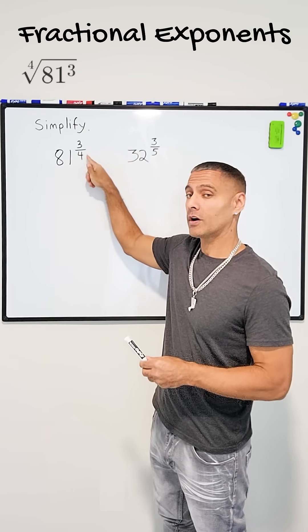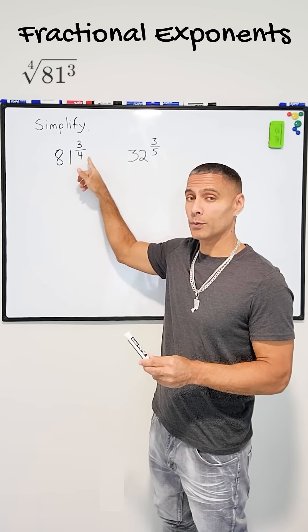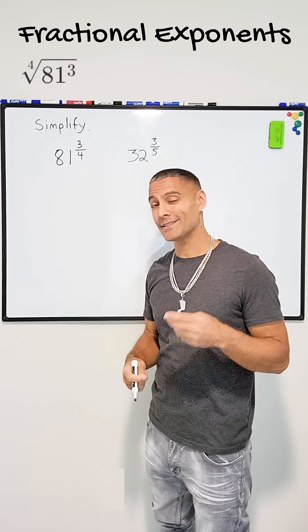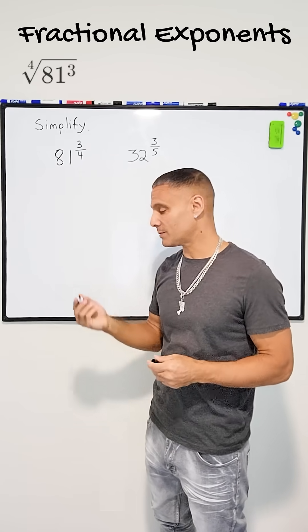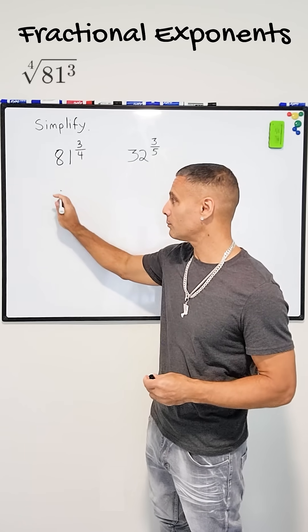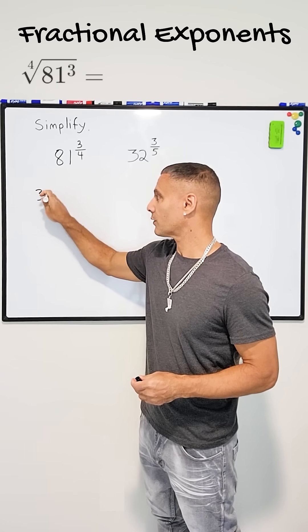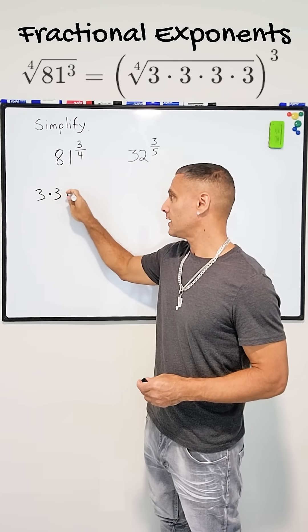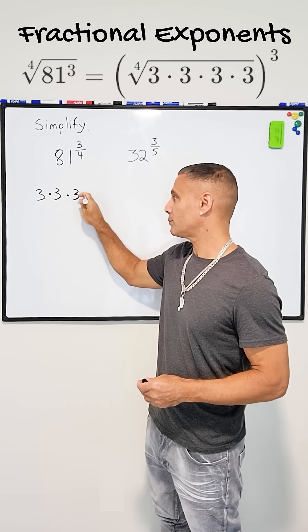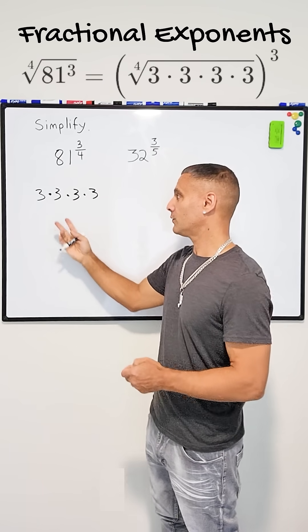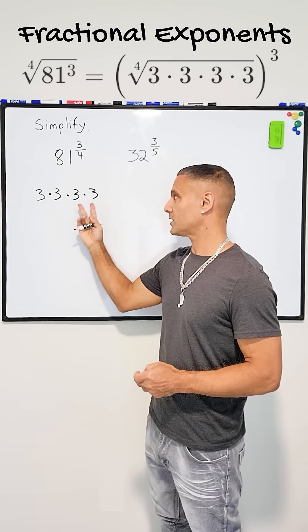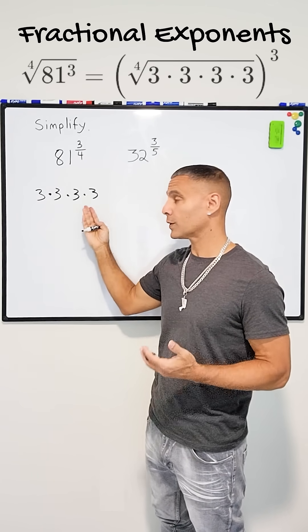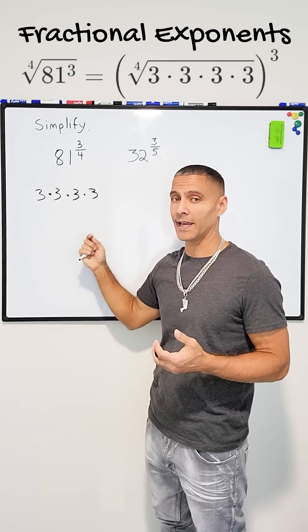I always like to start with the root, so we have to find the fourth root of 81. In other words, what would we multiply by itself four times to make 81? That number would be three, because three times three is nine, and we have another pair of threes which gives nine, and nine times nine is 81. So multiplying three by itself four times makes 81.